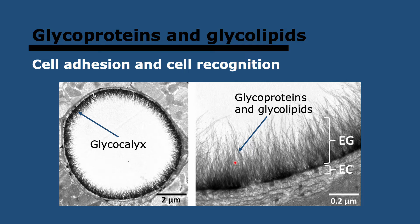The glycocalyx is the layer of carbohydrates that forms outside of the plasma membrane, and the glycocalyxes of adjacent cells can fuse, binding cells together and preventing tissue from falling apart. What you see here is many different cells in the image that have their glycocalyxes fused together, forming a large structure. One scale bar shows two micrometers for a single cell, while another shows 0.2 micrometers for the fused structure made of many cells joined together.